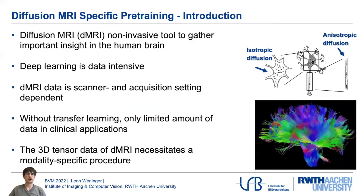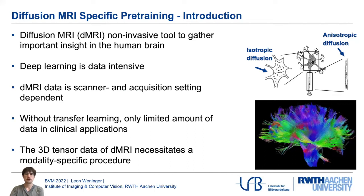Diffusion MRI is a critical and non-invasive tool to gather important insights into the human brain. In recent years, various deep learning approaches have been presented that increase the robustness and quality of diffusion MRI-derived insights into the human brain. However, deep learning is quite data intensive and diffusion MRI data is always scanner and acquisition setting dependent. Thus, without transfer learning, only a limited amount of data is available for clinical applications.